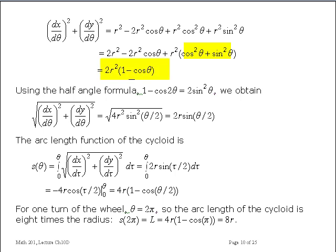So we get a much more condensed expression than we started with: 2r squared times the quantity 1 minus cosine theta. Remember the square root is going to be taken of these terms. So we would like to simplify it further, and we can do that by using the half angle formula.